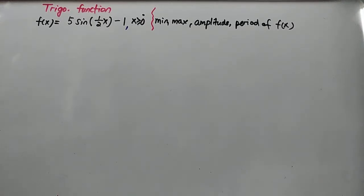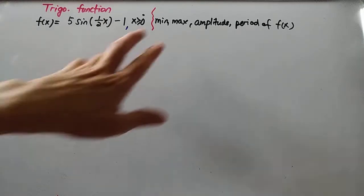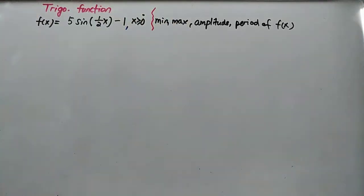Let's look at how to find the minimum, maximum value, amplitude, and period of a given trigonometric function. For example, given this trigonometric function where x is greater than or equal to zero, how do you find the maximum and minimum? Since you need to find both together, we can do it at the same time.